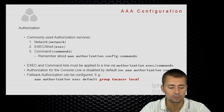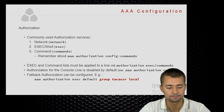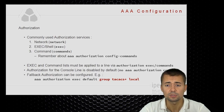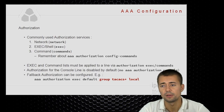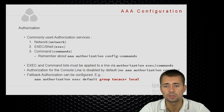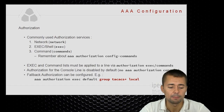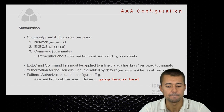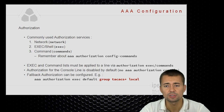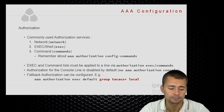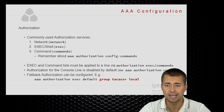Then we have the authorization function, which is typically used for exec, network, and command services. It is mostly used with RADIUS to authorize network services or download access, and on routers with Easy VPN to specify the location of the group policy. We also have exec authorization and command authorization.